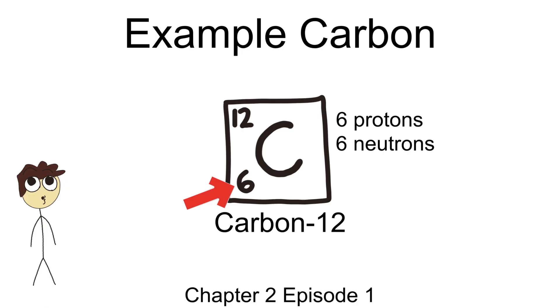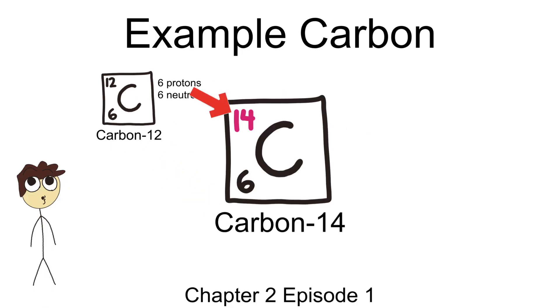But what if I told you there is an unstable, radioactive carbon-14? In actuality, this version of carbon actually exists in significant quantities in nature. How is this possible? Remember, the number of protons doesn't change when it's an isotope. If it did, then we'd be looking at another atom.